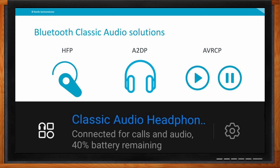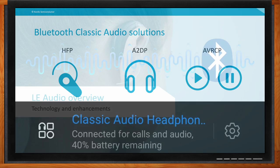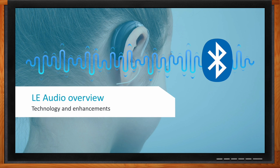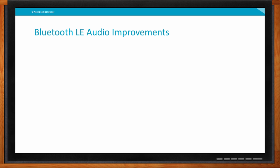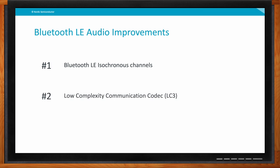Let's talk about Bluetooth LE. How does Bluetooth LE solve the challenges you mentioned earlier? We solve them in different ways — we have many improvements with LE audio, but most of them go back to one of these three things: the Bluetooth LE isochronous channels, a new communication codec called the Low Complexity Communication Codec LC3, and new, far more flexible audio profiles.